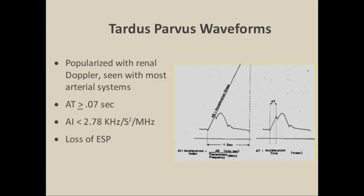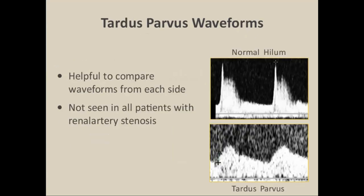Here are the numbers for characterizing the tardus-parvus waveform by acceleration time or index. Personally, I prefer to observe the waveforms and compare them from side to side. In this example, you can appreciate on the stenosis side the tardus waveform has a very abnormal contour with a delayed rise to peak systole, compared to the contralateral side which has a rapid systolic upstroke and early systolic compliance peak. Sometimes just comparing both sides makes the diagnosis relatively easy.